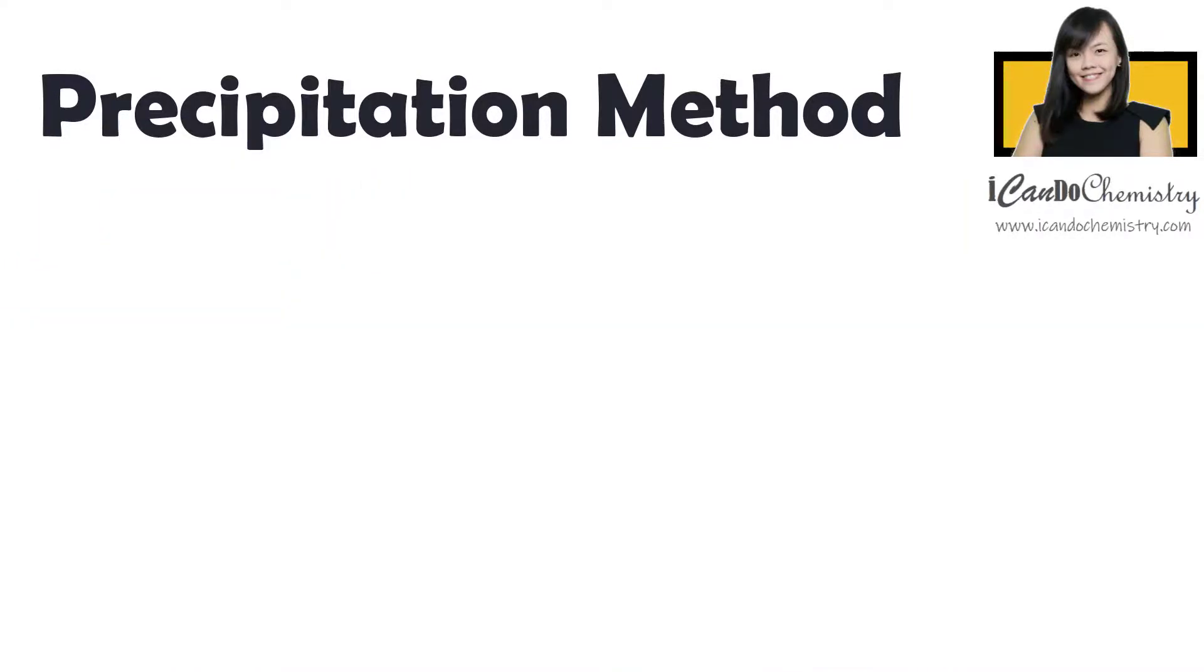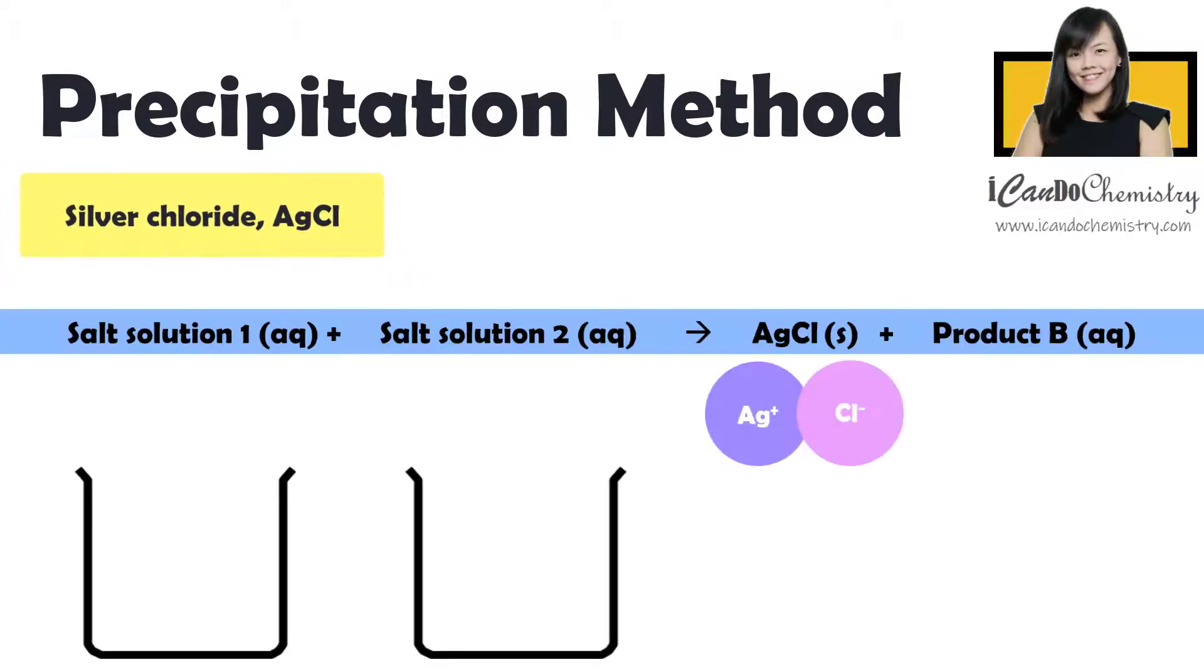Now let's consider another example, silver chloride. Again, to form insoluble silver chloride, we will need to choose two soluble salts. One of it contains silver cation, Ag+, and another contains chloride anion, Cl-.